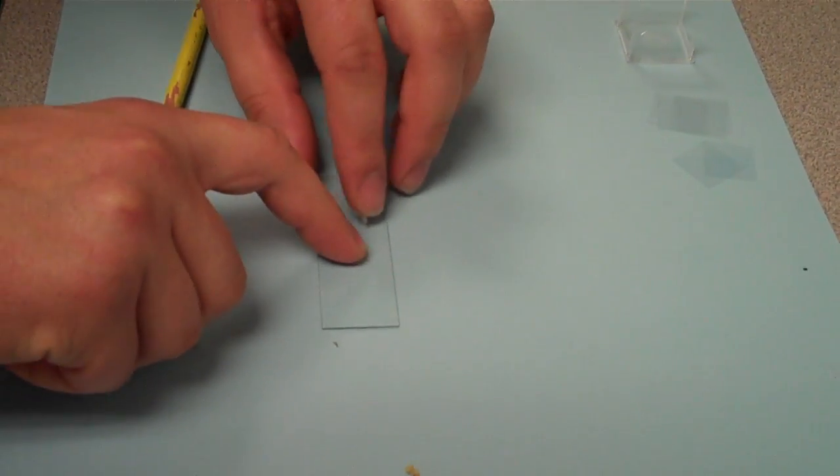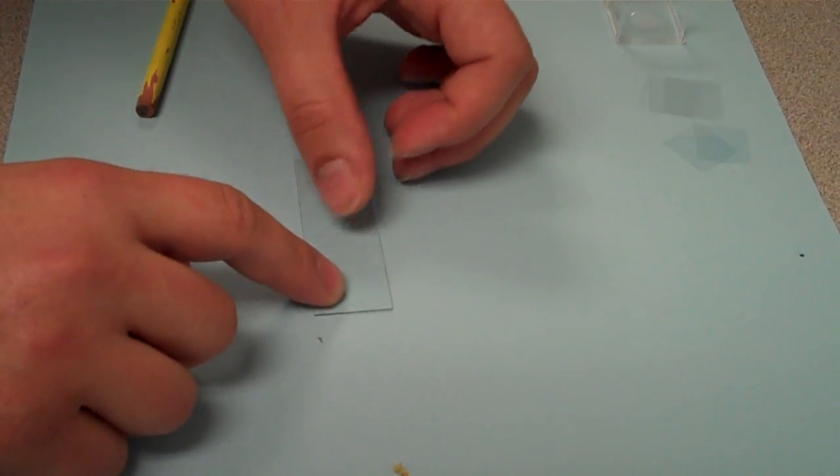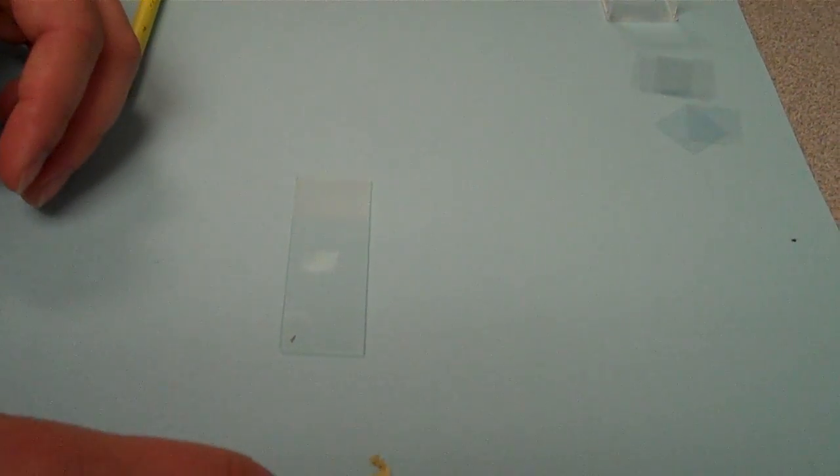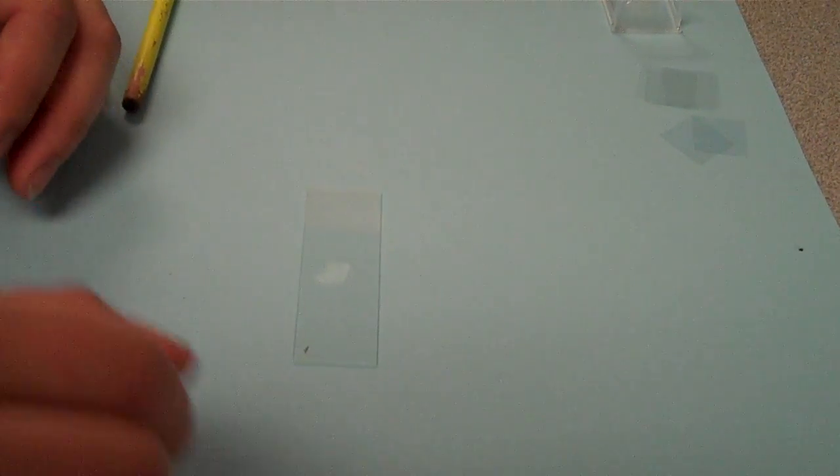And then you stick it to the slide. Now if you're using a new slide, you won't need to clean it. If you're using an old slide, just give it a bit of a wipe down with alcohol first and let it dry off.